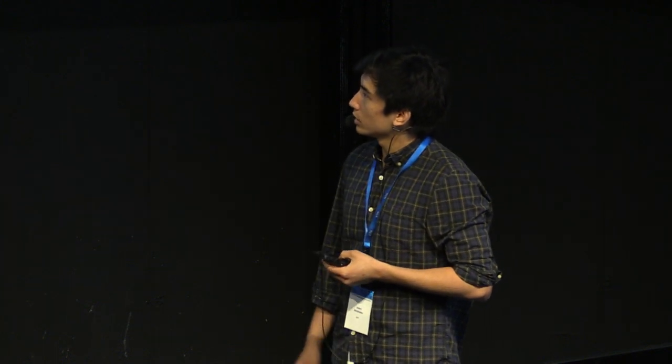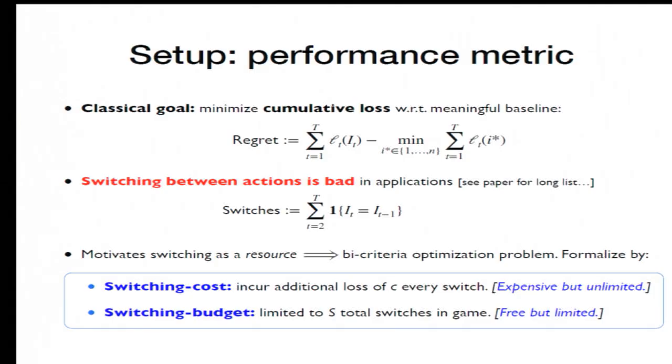The literature has, in the past, mostly focused on the switching cost setting because it's very practically motivated and, frankly, a bit easier to analyze. The budget setting, though, is also interesting. As we'll see later in the talk, understanding the switching budget setting allows for a very fine-grained understanding of the trade-off between regret and switches.